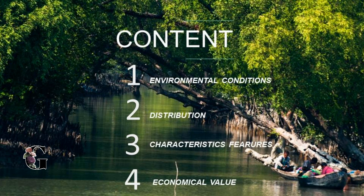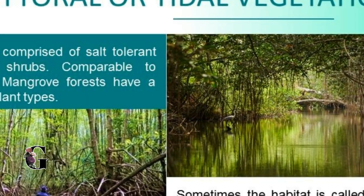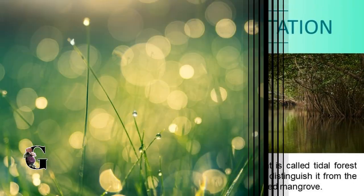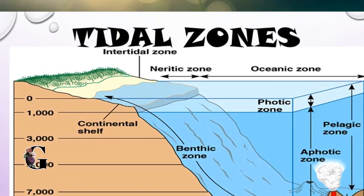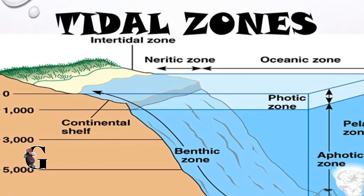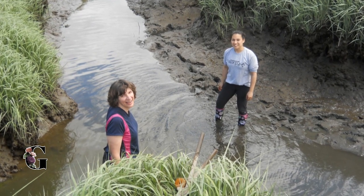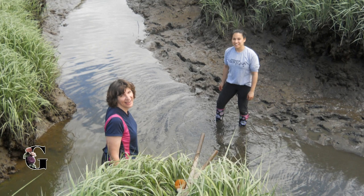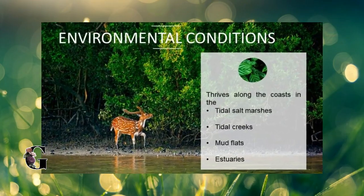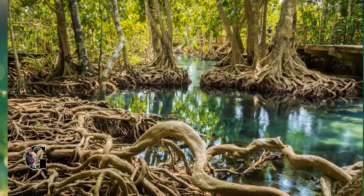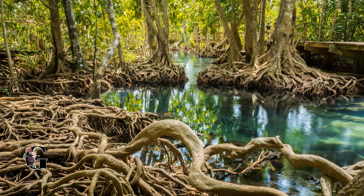The tidal forest comprises of salt tolerant trees and shrubs. The forests are found specifically in areas influenced by tide — mud and silt gets deposited on such coasts. Thus the tidal forest thrives best along the mudflats, estuaries, tidal creeks, and tidal salt marshes. Dense mangroves are the most common varieties found in such kind of forest.